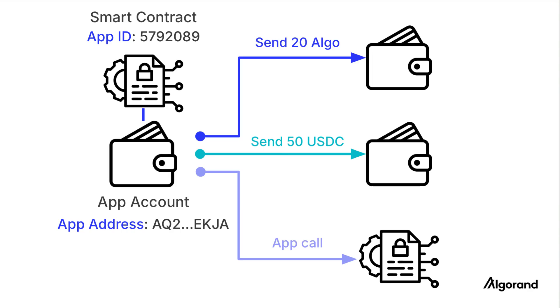For Algorand smart contracts to send transactions — like sending algos or calling another smart contract — you need to send inner transactions through the associated application account.